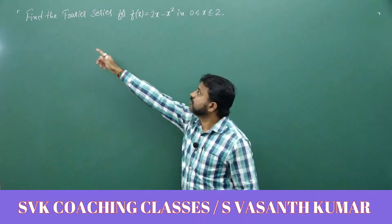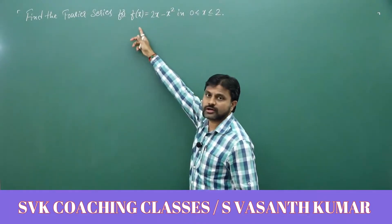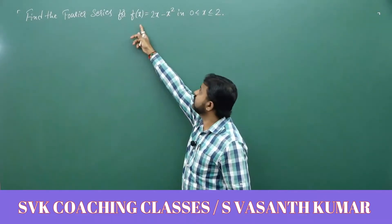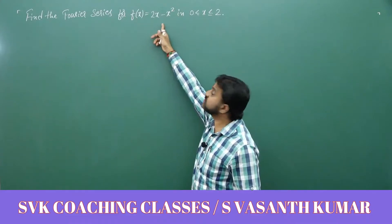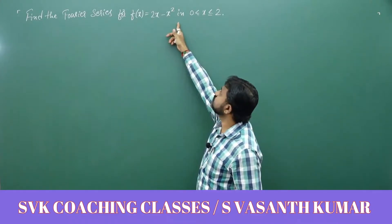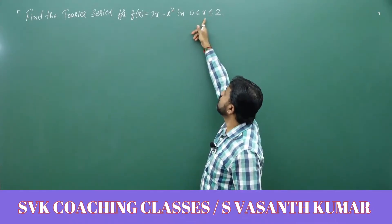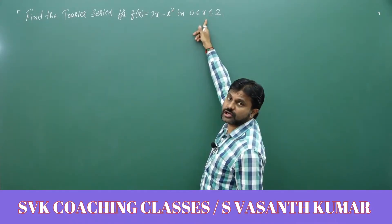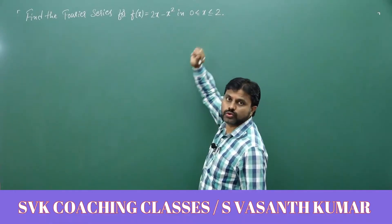Consider the problem: find the Fourier series for the function f(x) = 2x − x² in the interval 0 ≤ x ≤ 2.